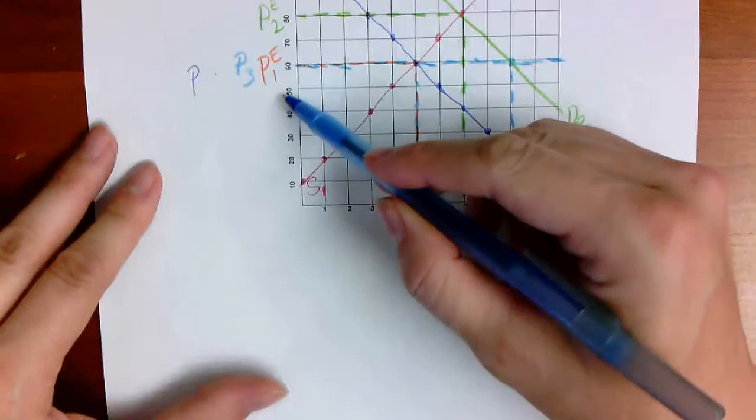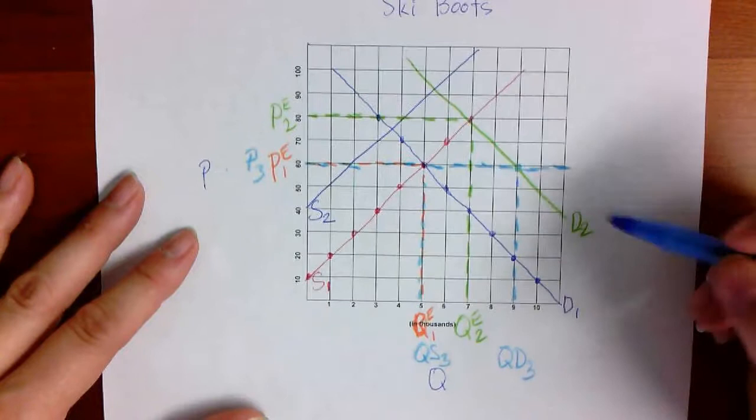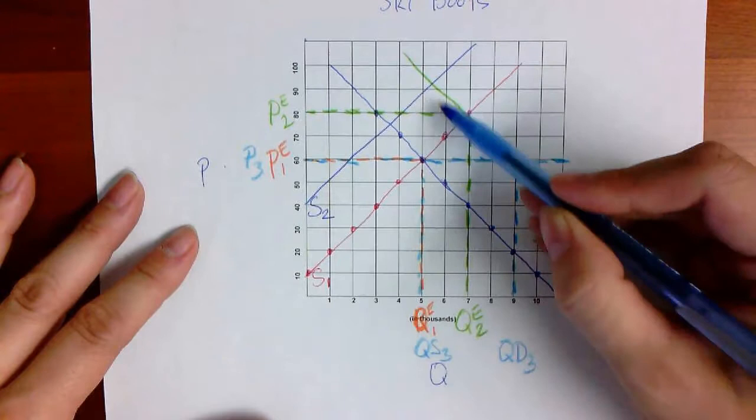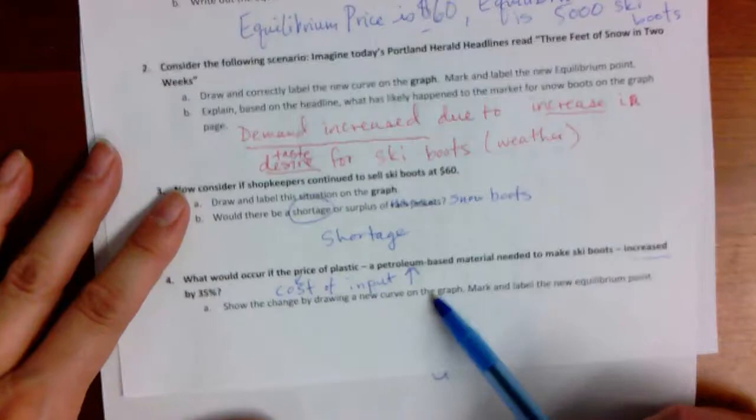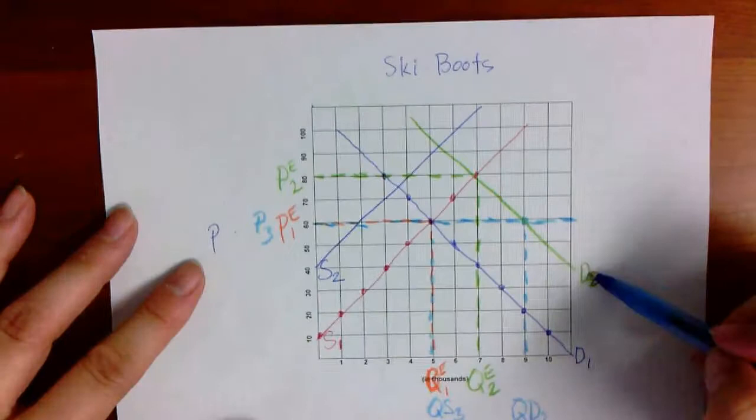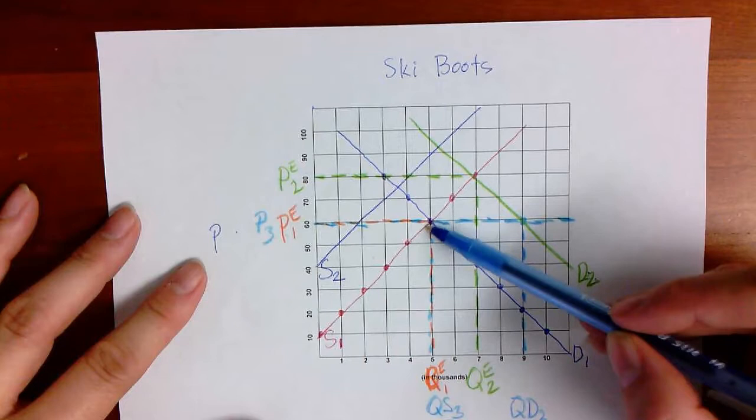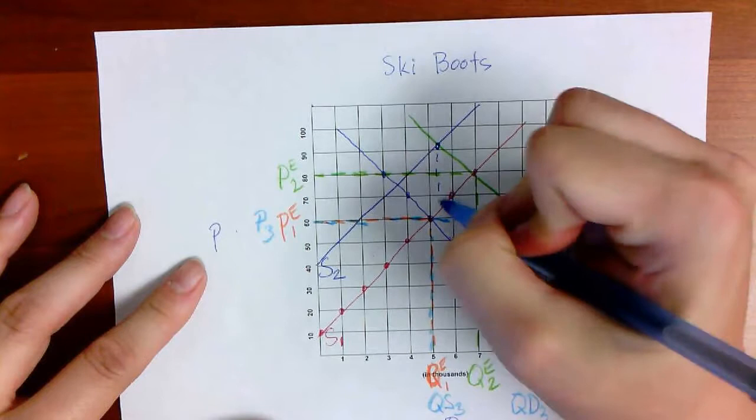And here we're going to show supply decreasing, shifting to the left. Here we go. A new supply curve. S2. And now, here's where people are going to get really confused. You need to make sure you have the most current demand curve and the most current supply curve when you plot your third equilibrium. This instruction says, put the new curve on the graph and then mark and label new equilibrium. You have to remember that you need to look for the newest demand curve and the newest supply curve. Some of you are going to mess up and you're going to put it here. Some of you are going to mess up and you're going to put it here. But you need the newest with the newest. And that point is here. This is the new equilibrium point right here.